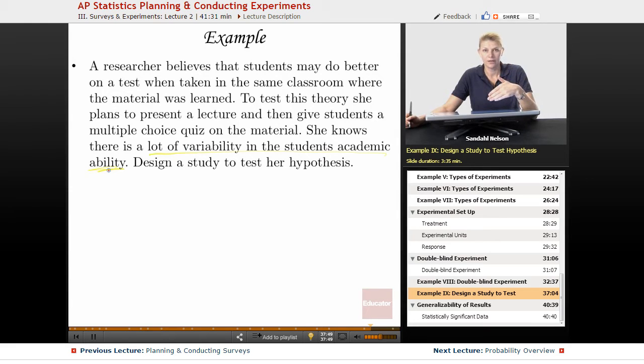If you only have one variable, sometimes it's easier to block. You could just block on academic ability, whereas if you match on it, sometimes those pairs are different in other ways. So in this case, let's think back.